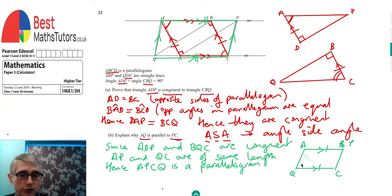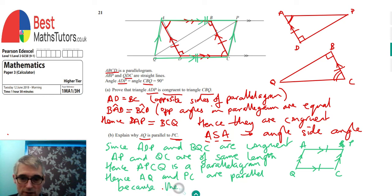And going back to the rules of parallelograms, that means opposite sides must also be parallel. The other opposite sides are AQ and PC. So, you can say, hence, AQ and PC are parallel. And the reason is because they're opposite sides of a parallelogram. So, because they are opposite sides of parallelogram.